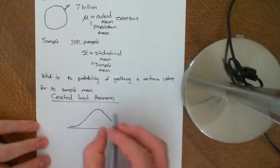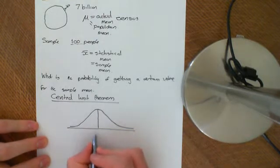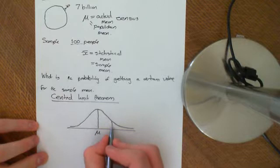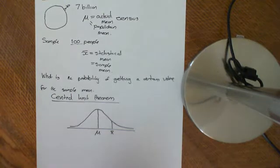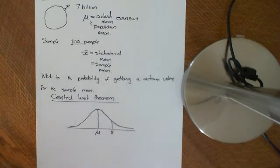So your x bar is going to be some value along here, and the normal distribution is going to be centred at mu. And basically, that's the motivation for why we want to study the normal distribution, why so much effort is put into studying the normal distribution.